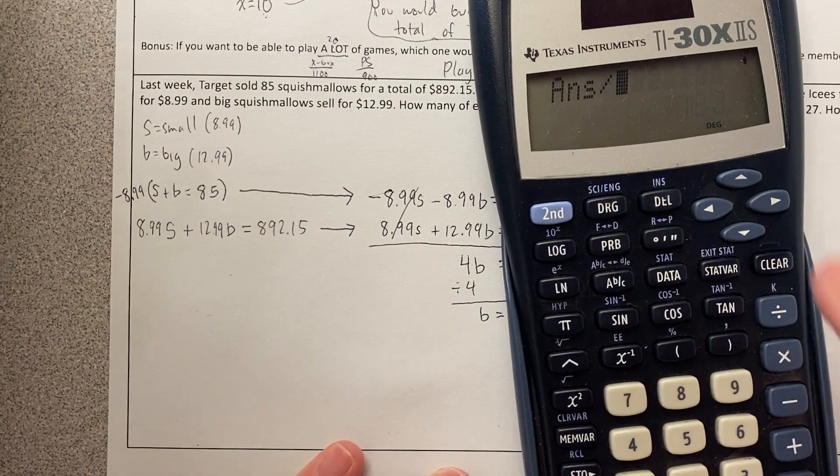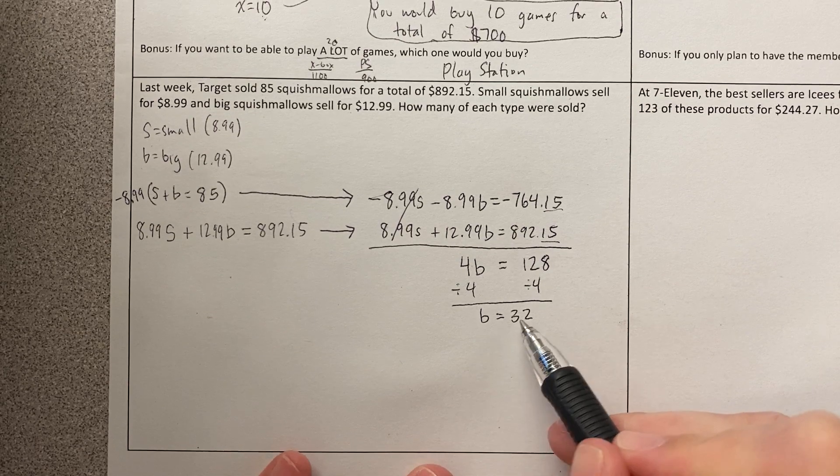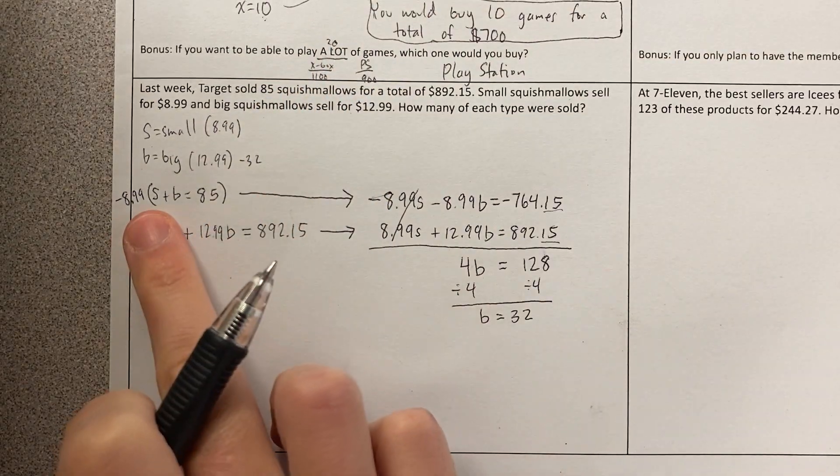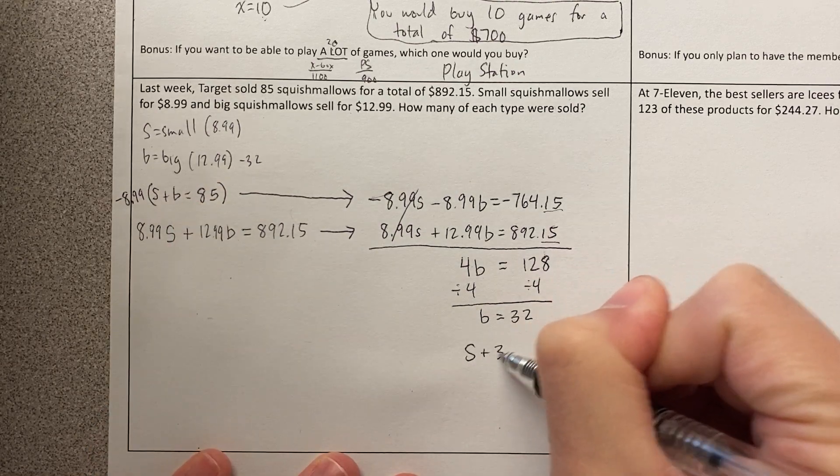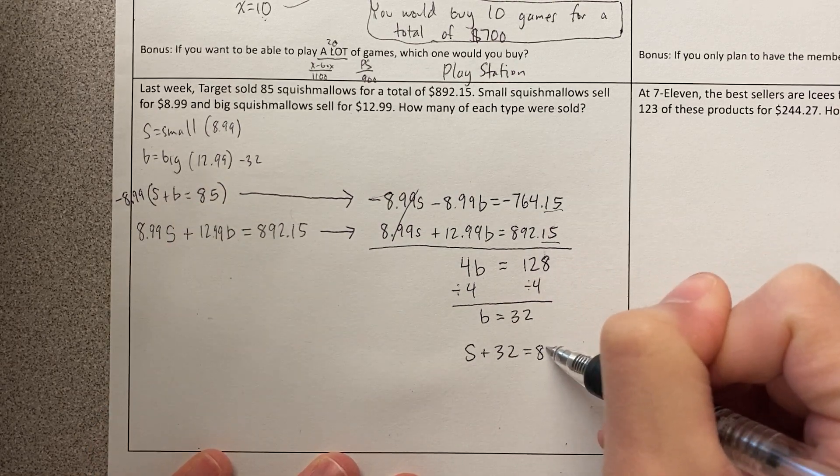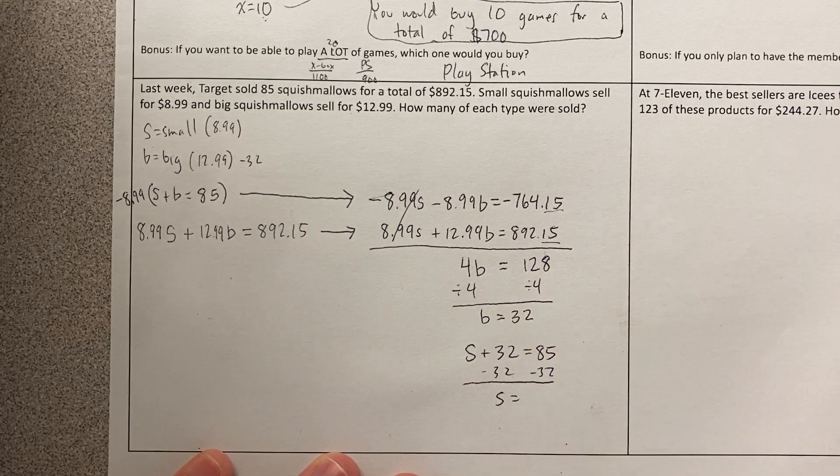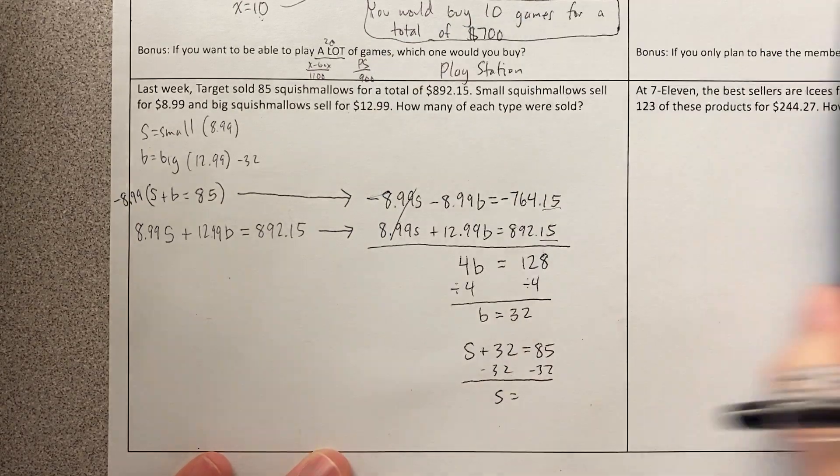Again, you can be really careful. I already had 128 in my calculator. I'm dividing by 4. I get 32. So the number of big Squishmallows looks like 32. And then let's see. The small plus the big is 85. So the small plus the big is 85. I'm going to subtract 32 from both sides. And the number of small Squishmallows, 85 minus 32, is 53.